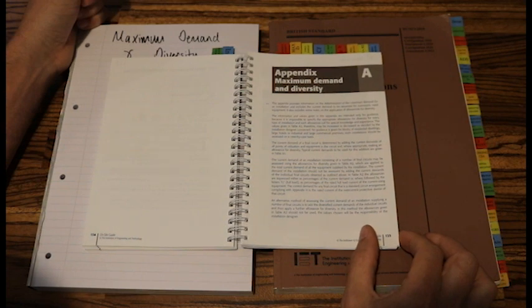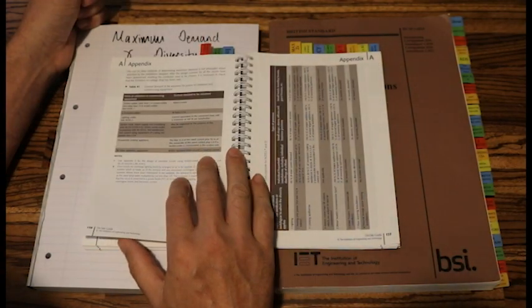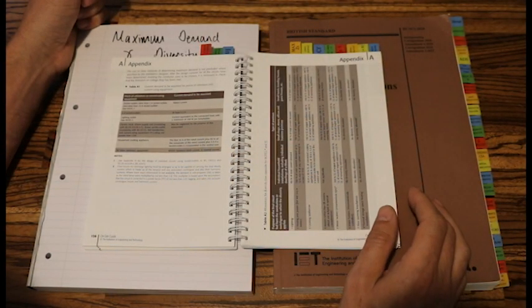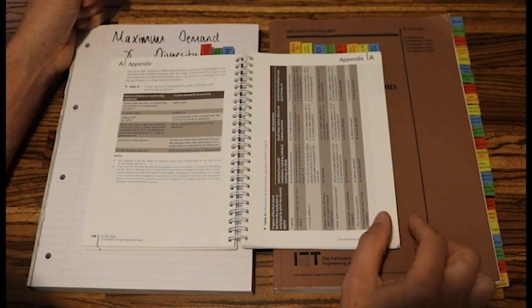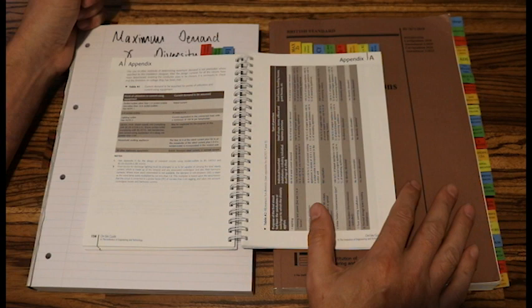It gives you a brief explanation there on maximum demand and diversity. And if you turn the page, this is what's important. Page 136, 137 and 138 have got tables that we will need. So first of all, let's have a look at a cooker question.